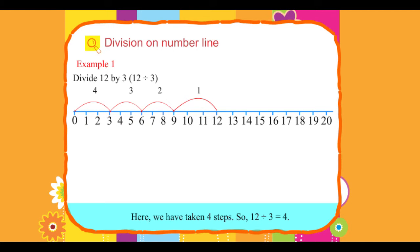Here, we have taken 4 steps. So, 12 divided by 3 equals 4.